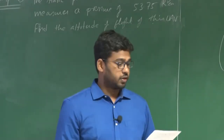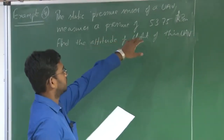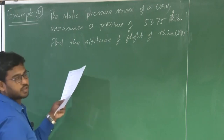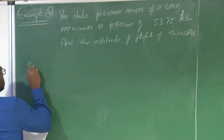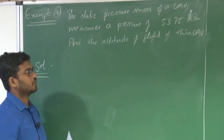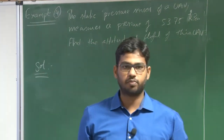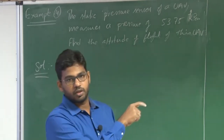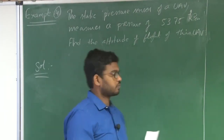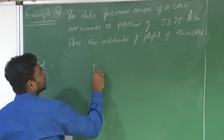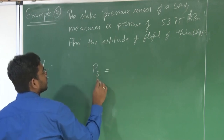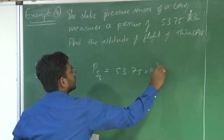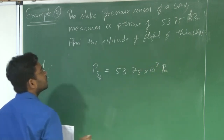Let us solve the final example again. The static pressure sensor of a UAV measures a pressure of approximately 53.75 kilopascals. We need to find the corresponding altitude of flight. This is in fact the practical way to find altitude using a static pressure sensor — the sensor measures static pressure at the particular altitude and from that we determine altitude. What we have is P_s at h equals 53.75 × 10³ pascals. We need to find the altitude.